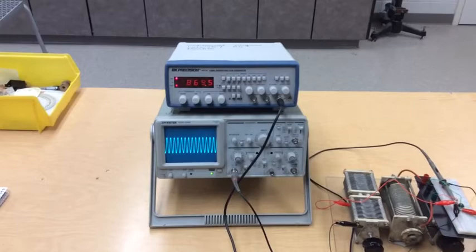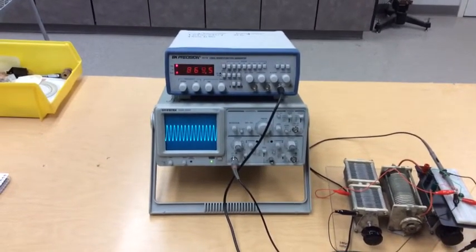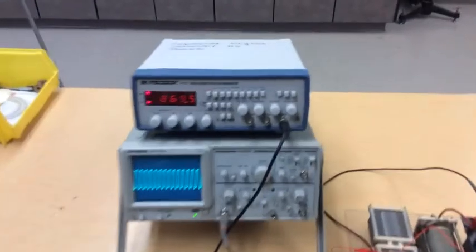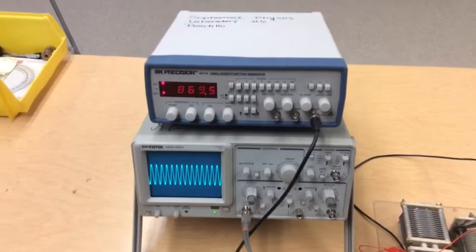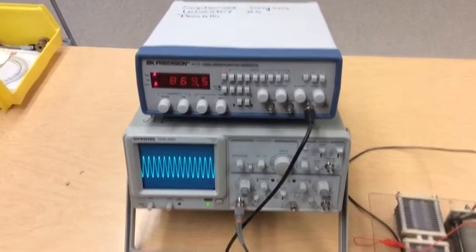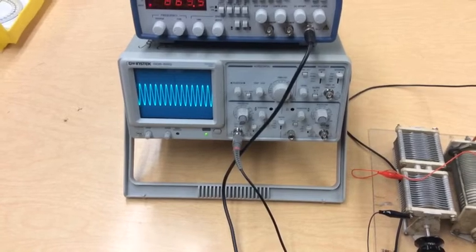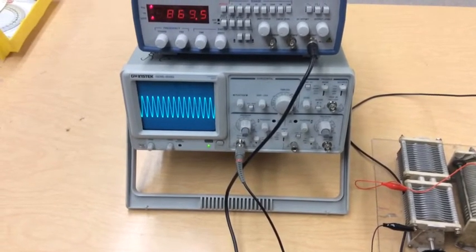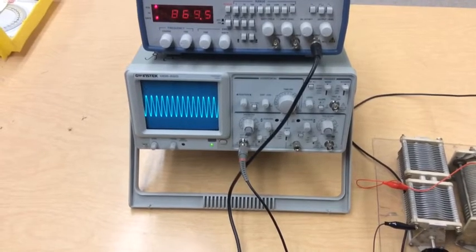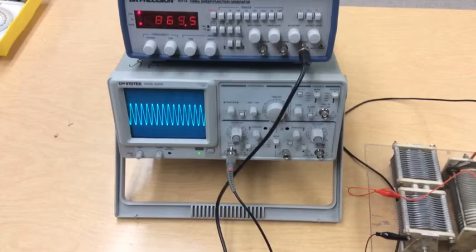On the top we have a 10 megahertz function generator. What that means is that we can create a sine wave, a square wave, or a saw wave that is between single digits up to 10 megahertz. Below that we have a 20 megahertz oscilloscope and what that means is that we can measure voltage across a circuit that is producing up to a 20 megahertz signal with decent resolution.